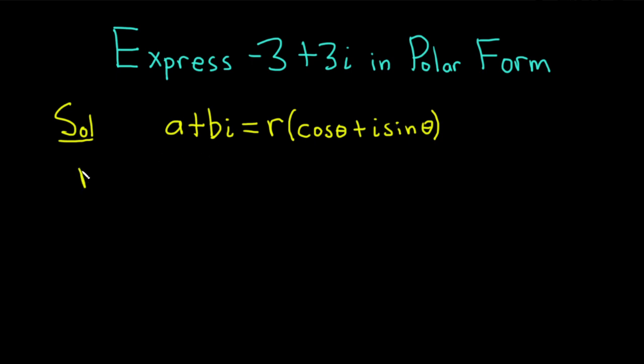So in this case, r is the square root of a squared plus b squared. So these are the formulas you would want to memorize in order to write something in polar form.